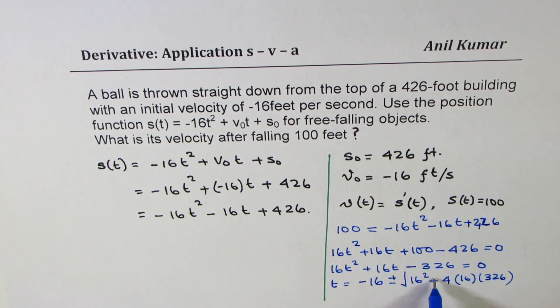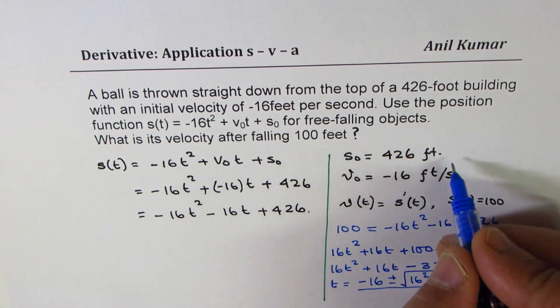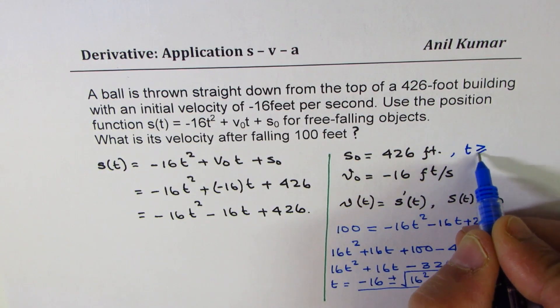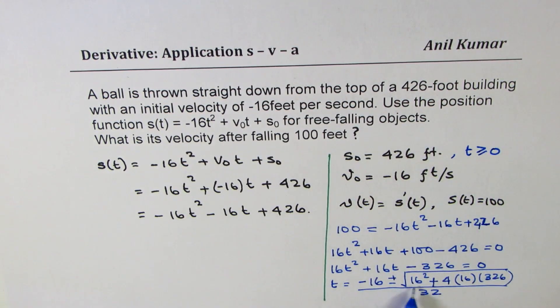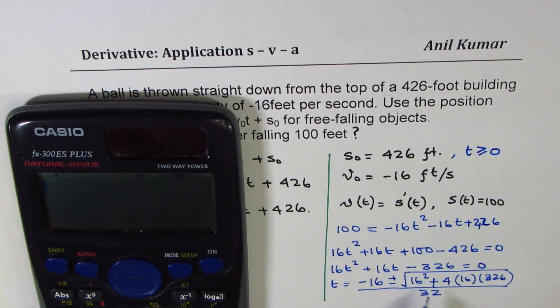Since it is negative, we will make this as positive square root divided by 2 times 16, which is 32. Now, the answer cannot be negative. We know here time t is greater than or equal to 0. So we will take the positive answer for this.